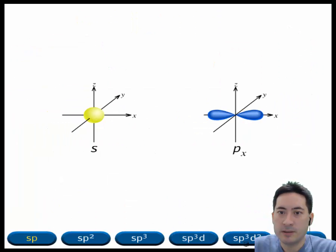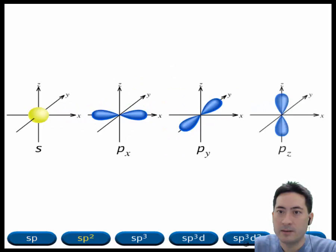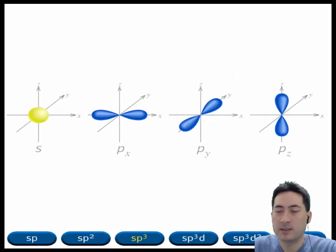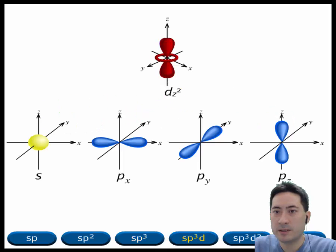Here we have an animation of this. So if you mix an s and a p you get 2 sps. Mix an s and 2ps you get sp2. Mix an s and 3ps and you get 4 sp3s.